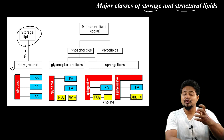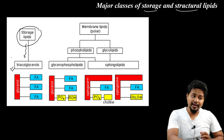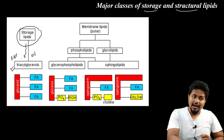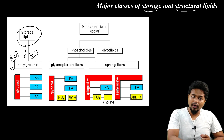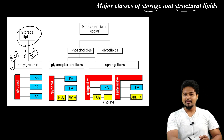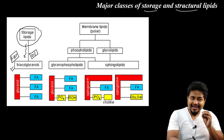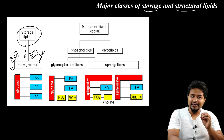Triacylglycerol holds fat — animal-derived lipids are called fat — and plant-derived lipids are called oil. So triacylglycerol, also known as triglyceride, is the key storage lipid we will discuss.